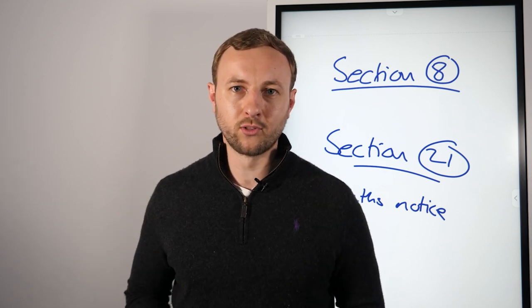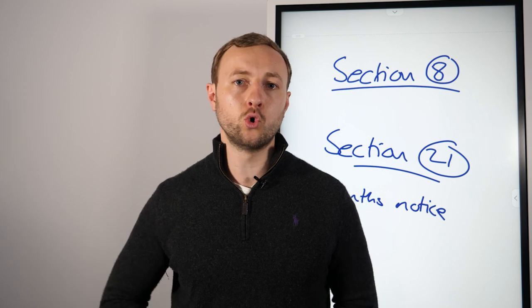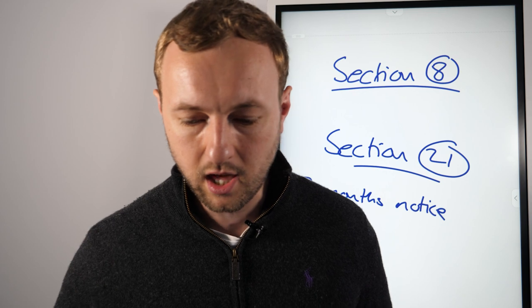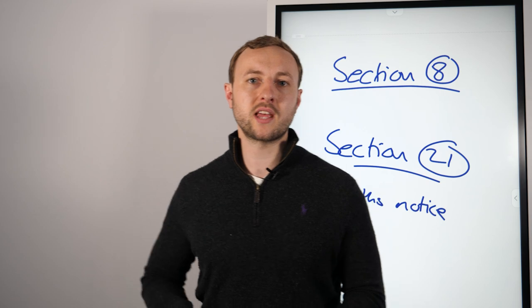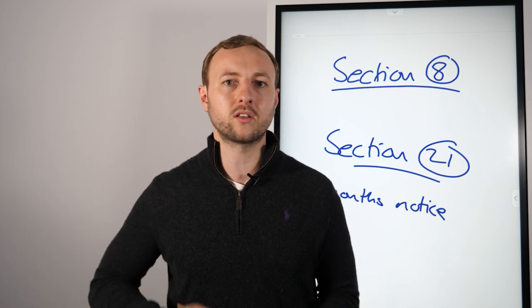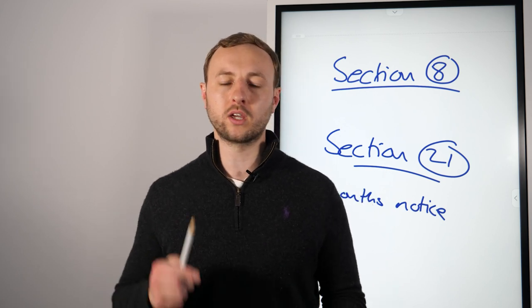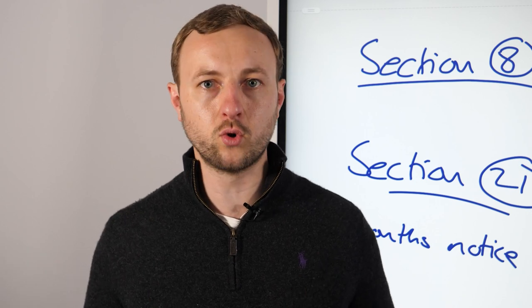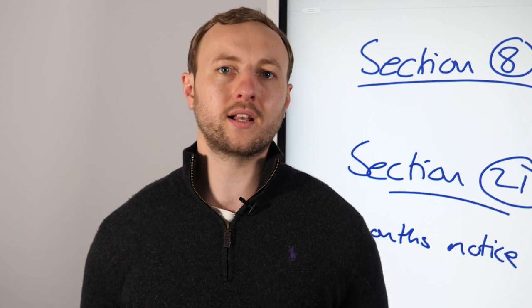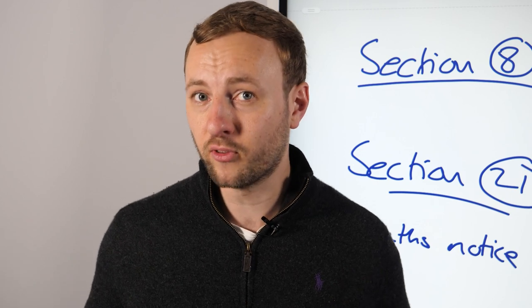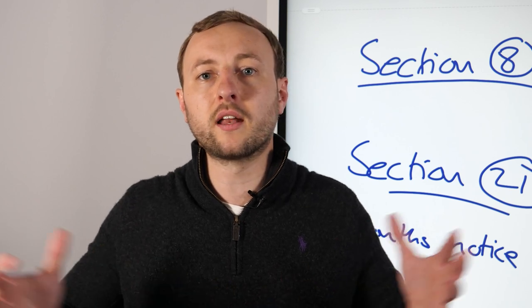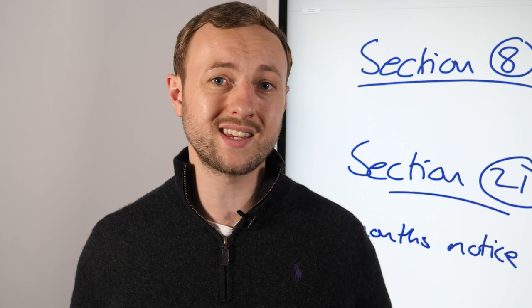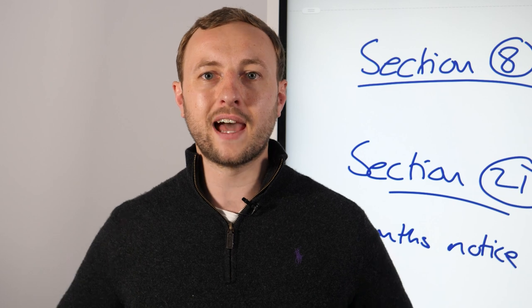For Section 8, you want to go to Schedule 2 of the Housing Act 1988. The form is called 'Notice Seeking Possession of a Property Let on an Assured Tenancy or Assured Agricultural Occupancy.' This is for getting people out for wrongful doing — lack of rent, damages, causing a nuisance. The notice period for Section 8 is a minimum of two weeks and up to two months, depending on the situation and grounds used.